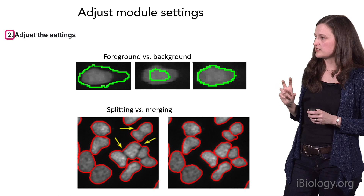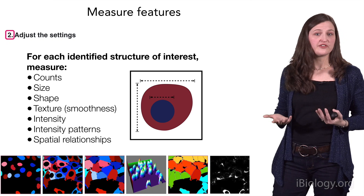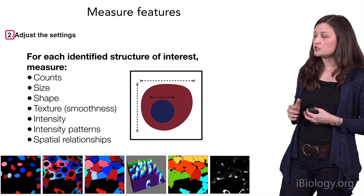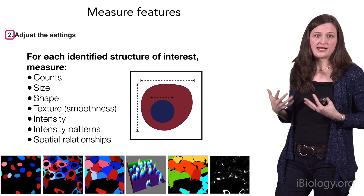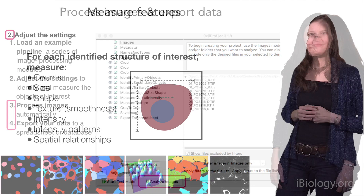Once you've identified your structures of interest, it's actually very straightforward to measure their properties. You just add different modules for different categories of metrics, which include counting how many of a thing exist, sizes, shapes, textures — which is the smoothness of a fluorescent intensity staining pattern — as well as the amount of intensity, which can correspond to the actual amount of a protein product in your images, and things like spatial relationships.